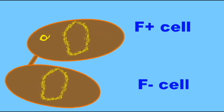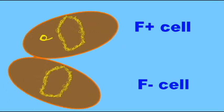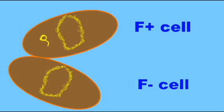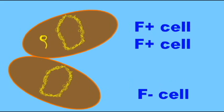The F-plus plasmid encodes proteins which are required to transfer the F-plasmid from an F-plus cell to an F-minus cell.